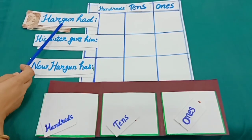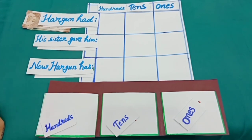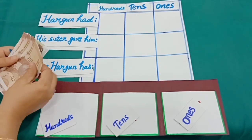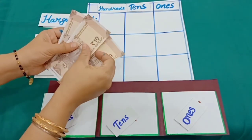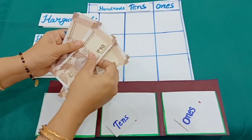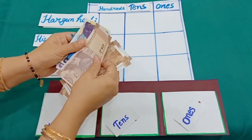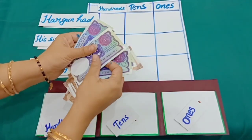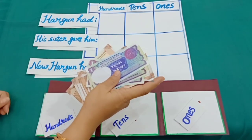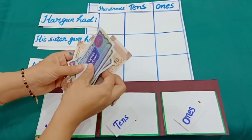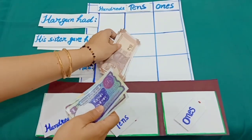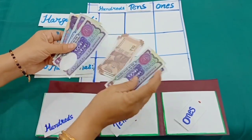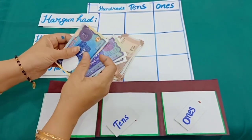Hargoon had 75 rupees. Let's count: 10, 20, 30, 40, 50, 60, 70, 71, 72, 73, 74, 75. So, dear students, firstly we will count the 1 rupee notes: 1, 2, 3, 4, 5.